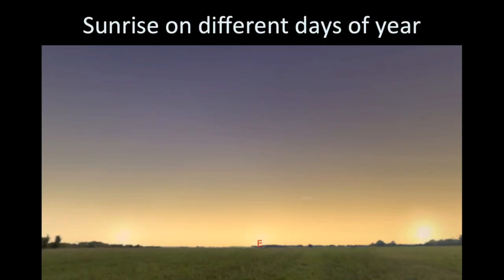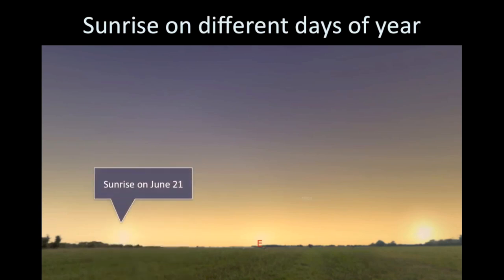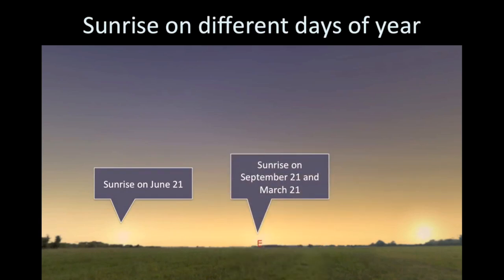Here is sunrise on three different days of the year for New York, simulated using the Stellarium program with three images overlaid. On the summer solstice, the Sun rises north of east. On the equinoxes, the Sun rises due east. On the winter solstice, the Sun rises south of east. Each day in between, the Sun incrementally moves to a different location on the horizon at sunrise. So looking at where sunrise occurs over the course of the year, you would notice this gradual shift.